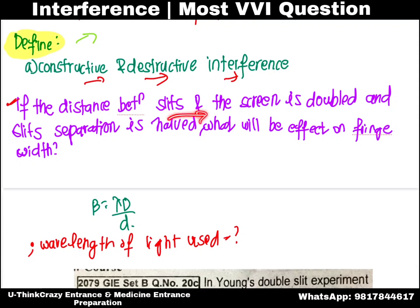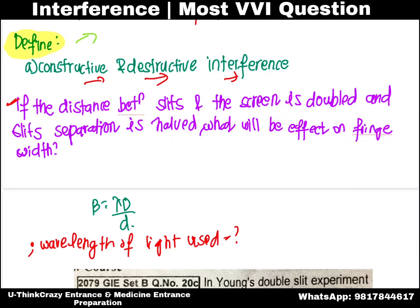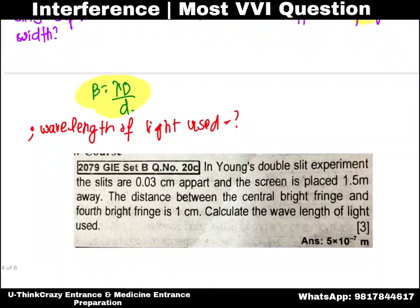If the distance between the slits and the screen is doubled, and the separation between the slits is halved, how much does the fringe width change? The formula for fringe width is β = λD/d. We need to solve this using the given values.